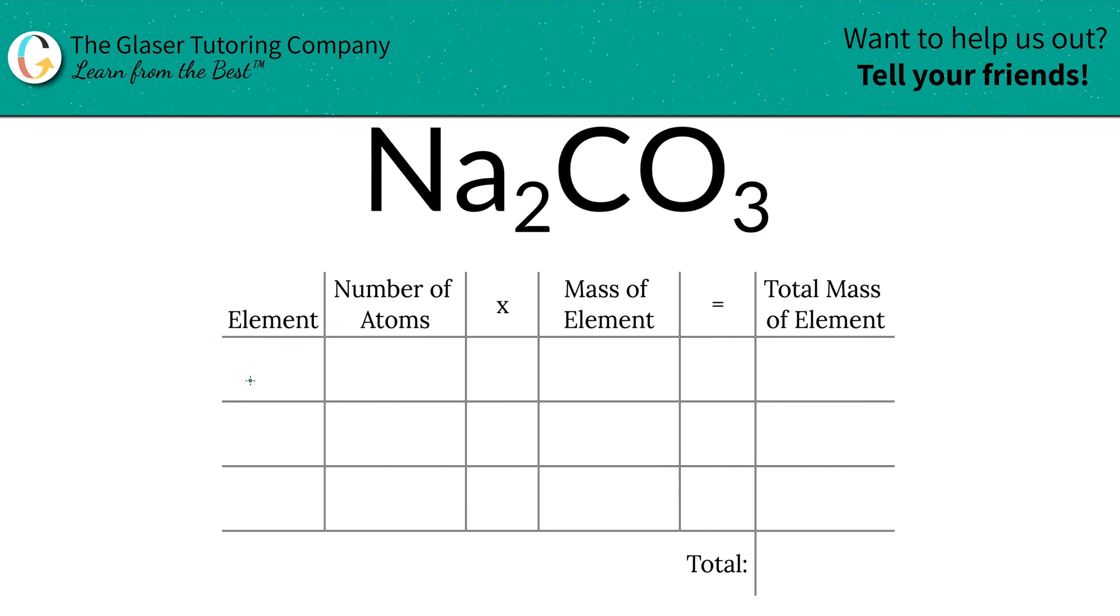The first thing is to write the elements down that we see: sodium, carbon, and oxygen. Then the next step is to write down the number of atoms, and that's where the subscripts come into play. If you don't see a subscript, put in a one. That's what it is assumed to be. So we got two sodium, one carbon, and three oxygen.